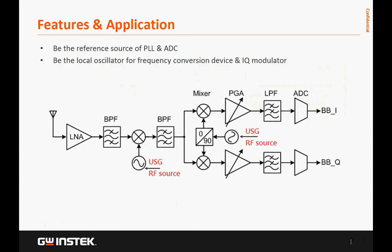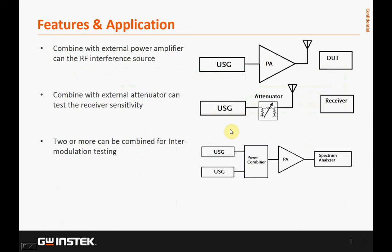Under fixed frequency mode, USG can be the reference source of PLL and ADC of the local oscillator for frequency conversion devices and IQ modulator. Under fixed frequency mode, USG combining with an external power amplifier can be the RF interference source. USG combining with an external attenuator can test the receiver sensitivity. Additionally, two or more USG units can be combined for intermodulation testing.